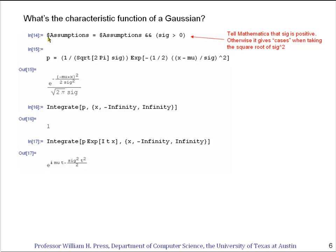Here the assumption is going to be sig is greater than zero. If you don't do that, then whenever you try to take a square root of sig squared, Mathematica divides into cases as to whether that should be plus or whether that should be minus. And you get kind of a mess printed out for the answer.